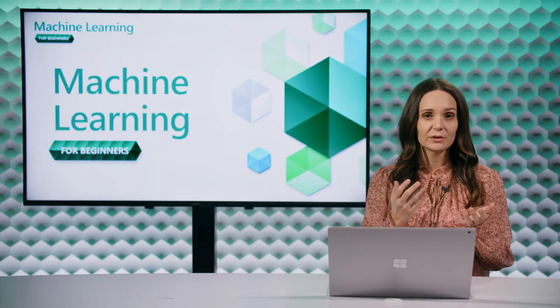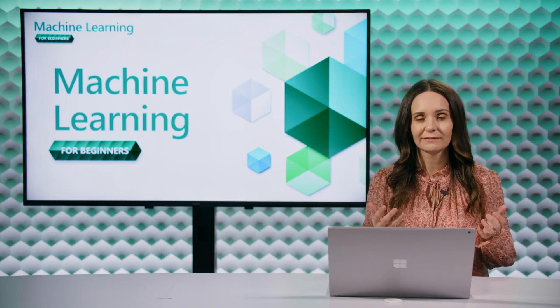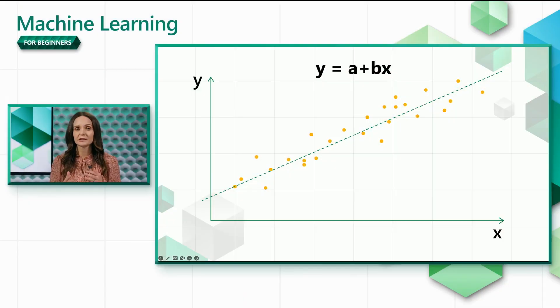In this scenario, you can use regression to find a mathematical formula that represents the general trend of the data. This formula encodes the relationship between our x and y variables and enables us to predict y for any given value of x.